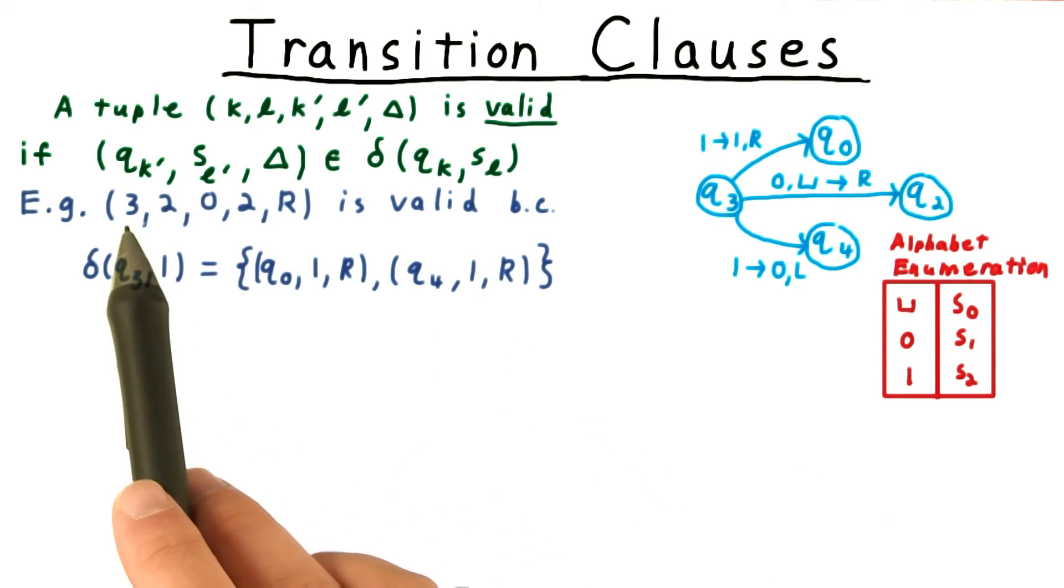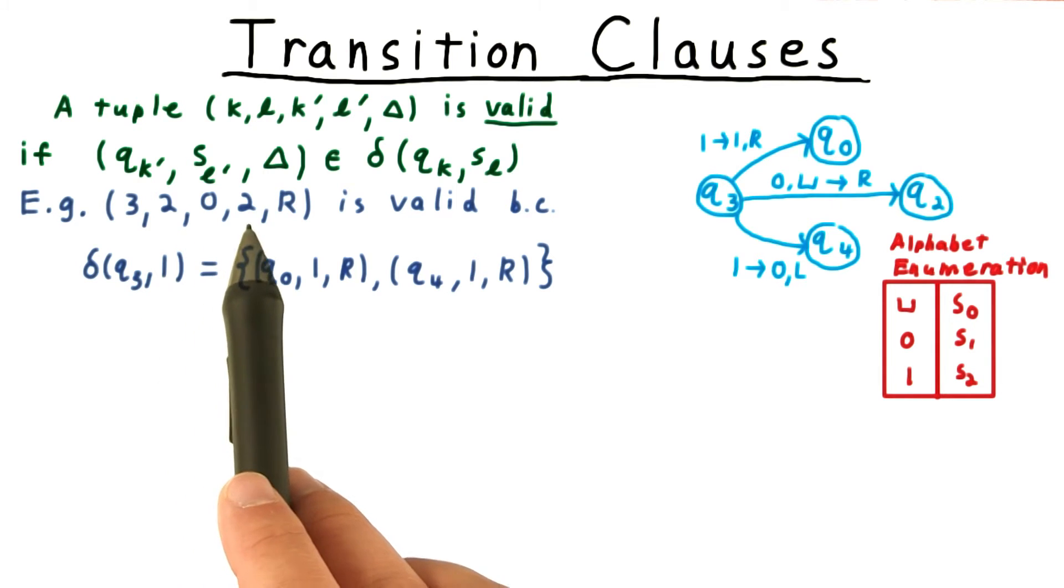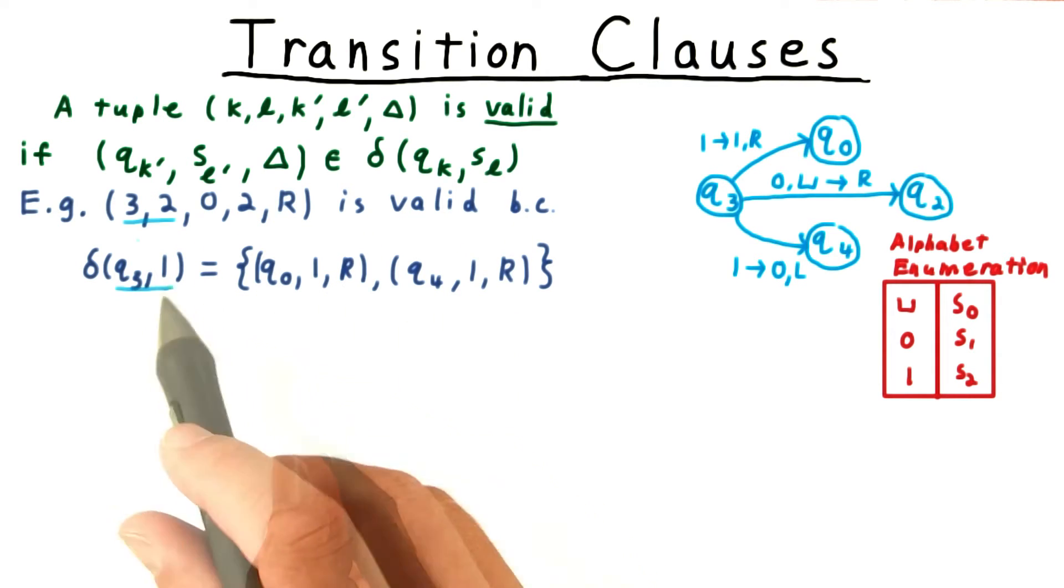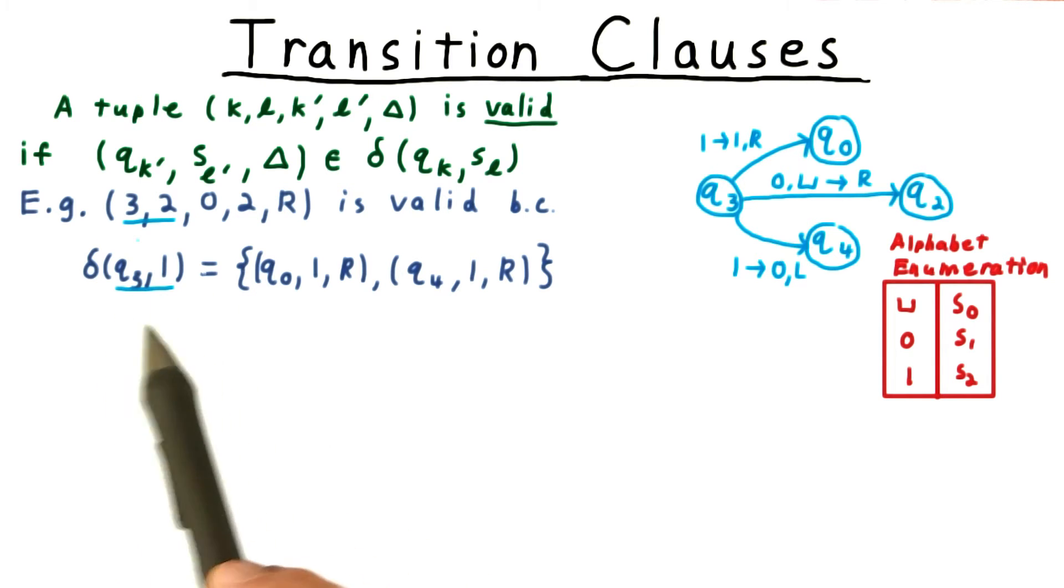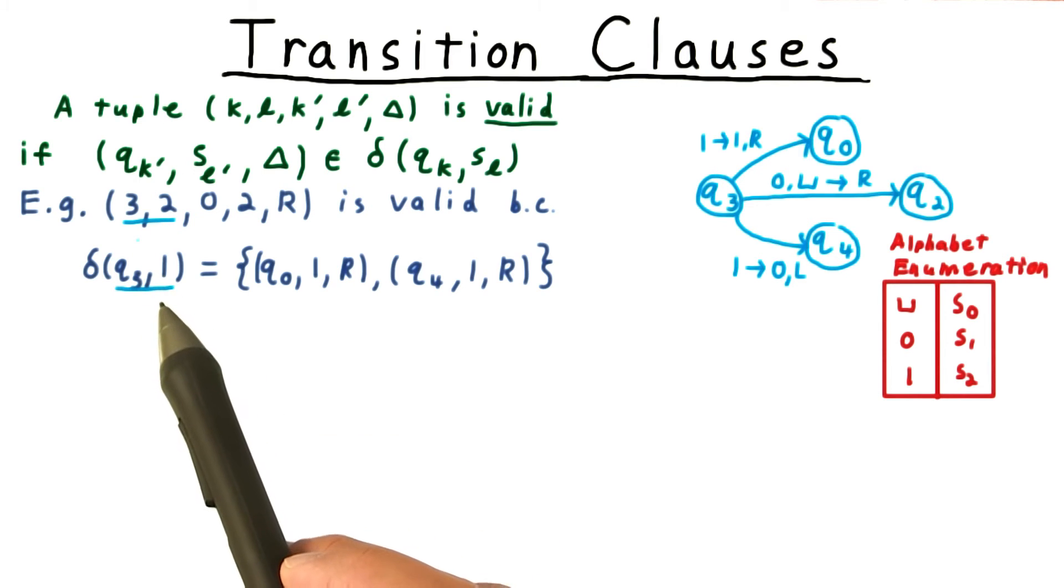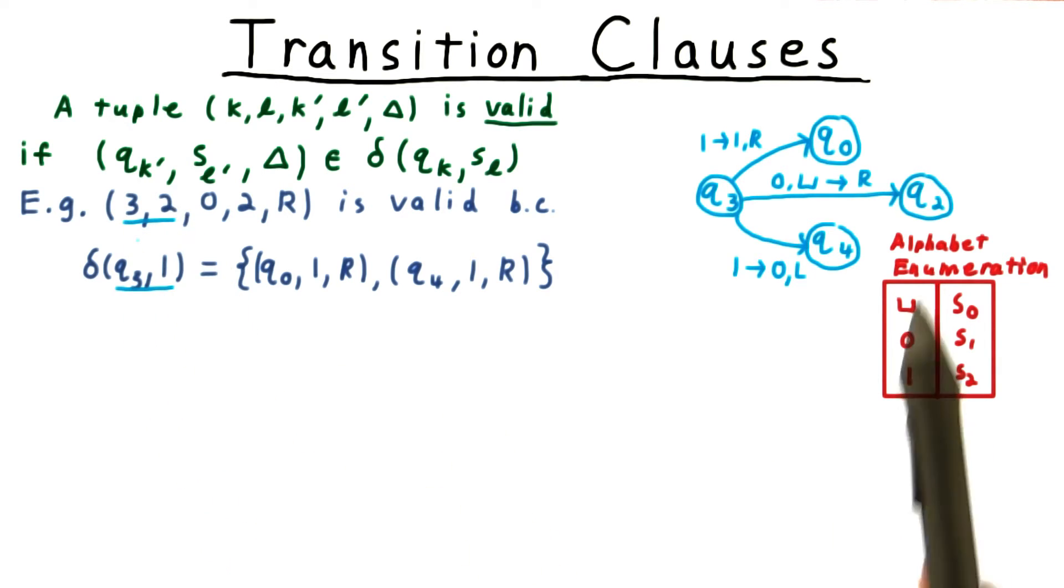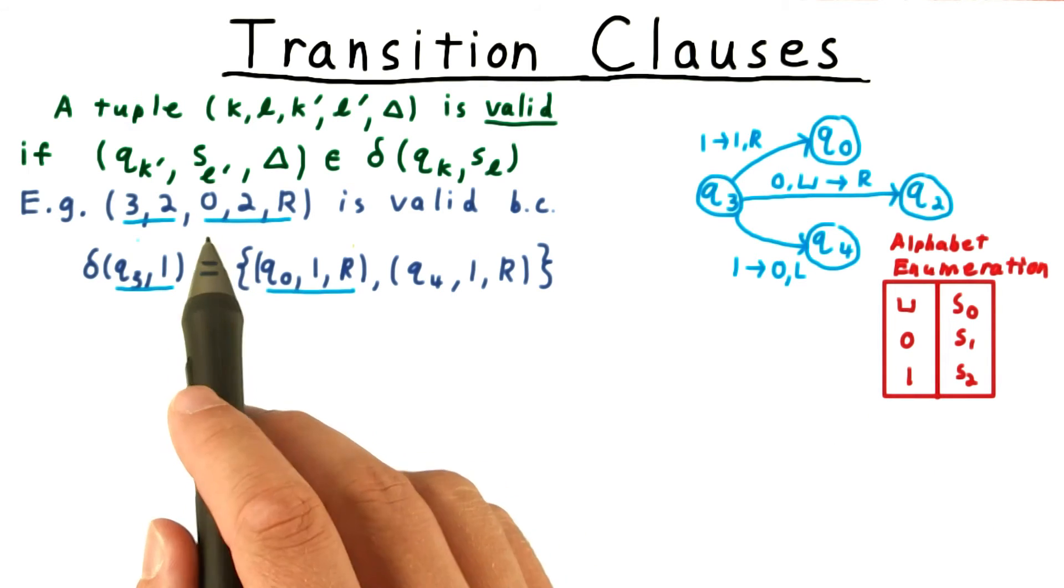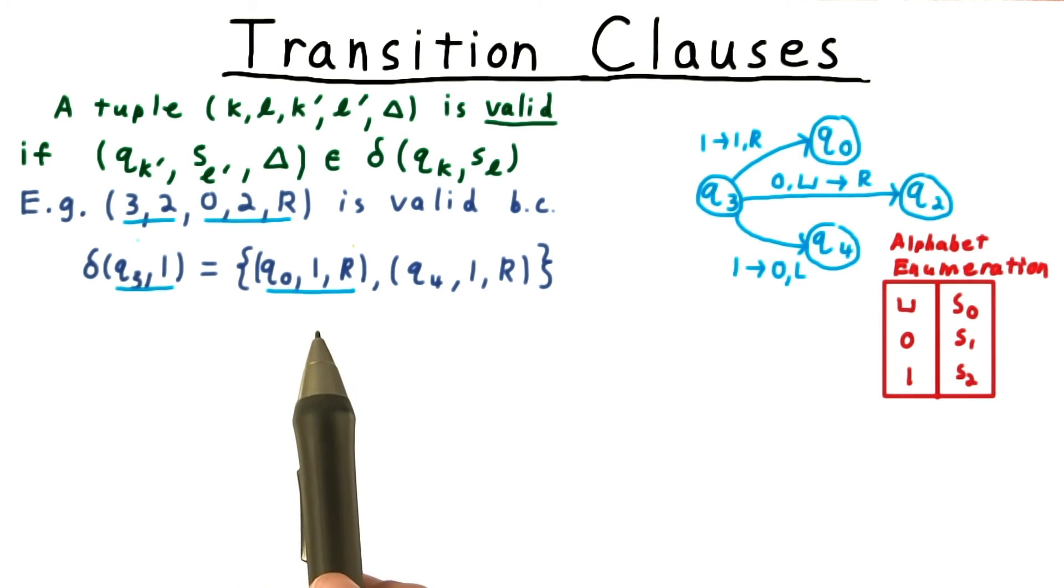For example, the tuple 3, 2, 0, 2, r is valid. The first two numbers here indicate which transition rule applies. And note here that I'm using the enumeration of the alphabet to translate the symbols here. 3 means state 3, and 2 means the symbol 1.